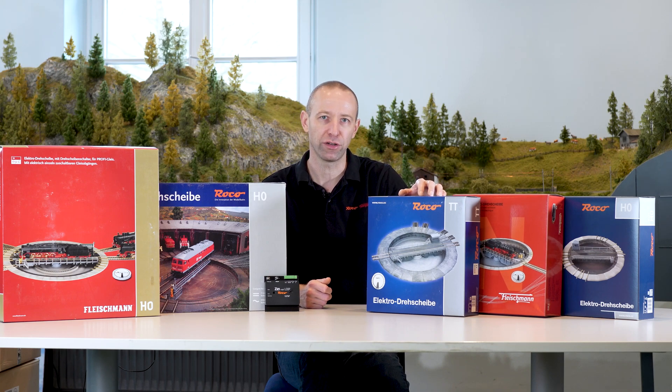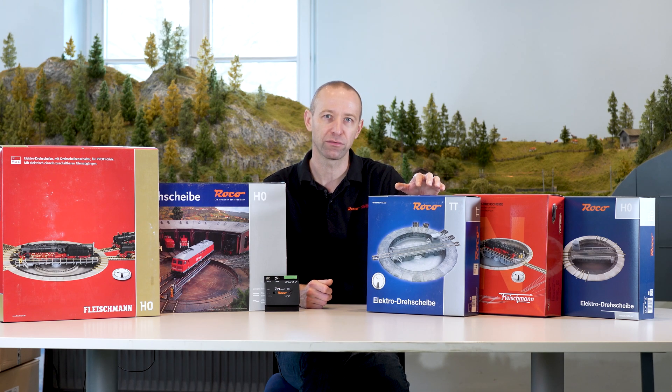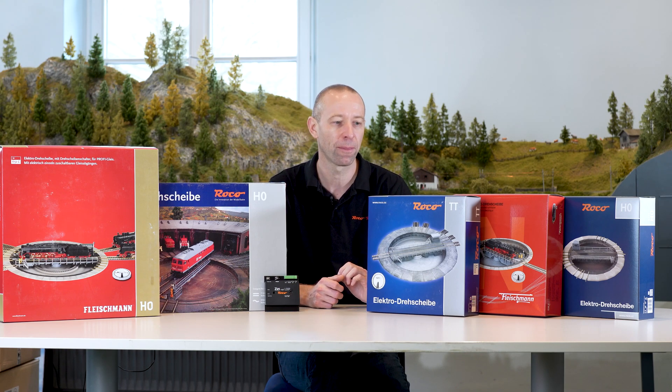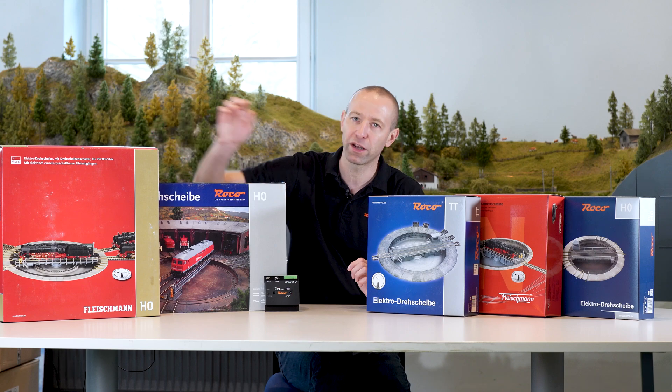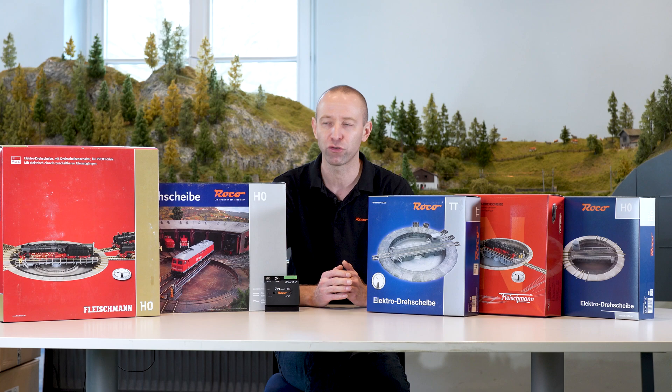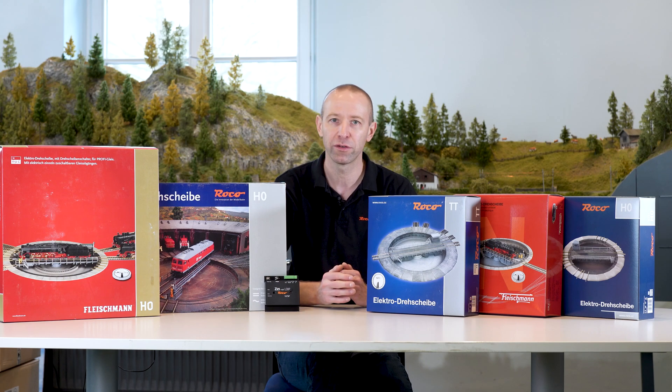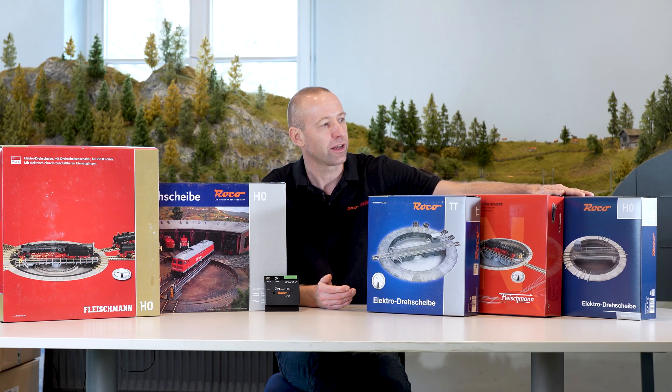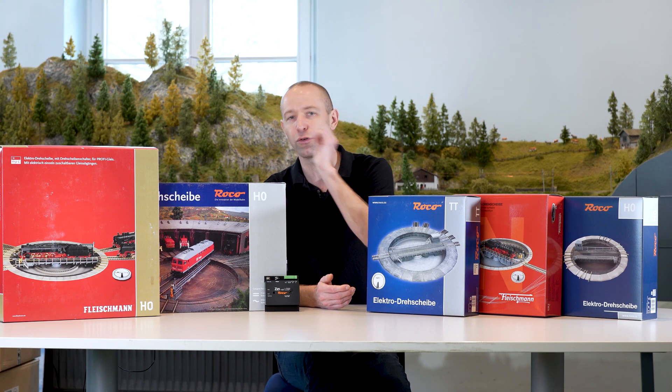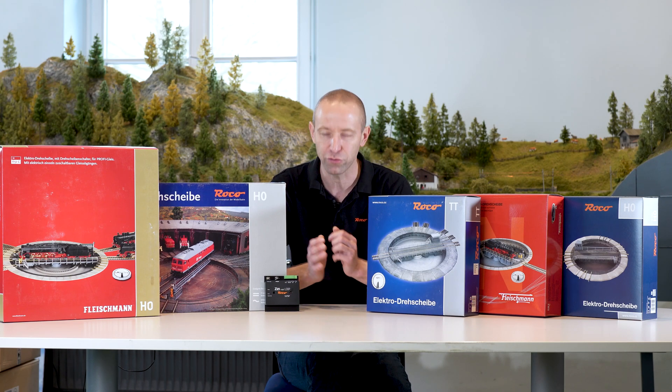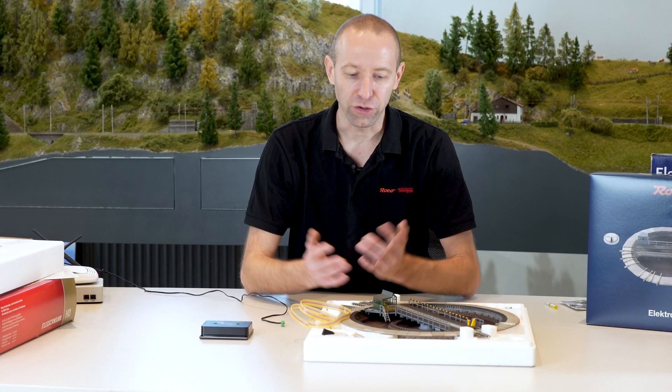With the end turntable, with the Roco TT turntable which was also available from Fleischmann in the early days, and also with the Fleischmann H0 turntable, we have the same cable colors everywhere from the platform. Let's use the H0 turntable as an example and take a look at how to connect the turntables. The new small Roco turntable and the large Roco turntable have different cable colors. That's why we'll also see how to connect these two turntables to the reverse loop module.